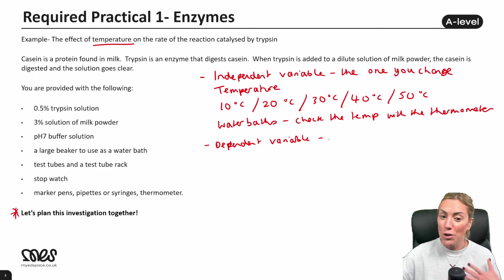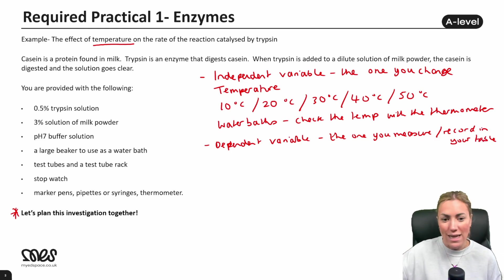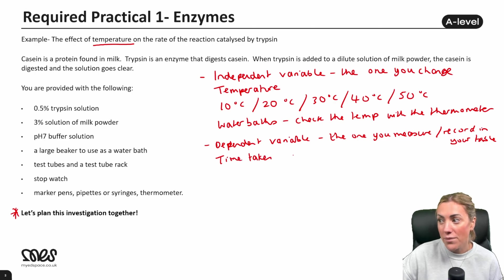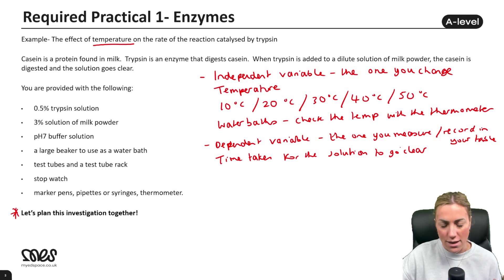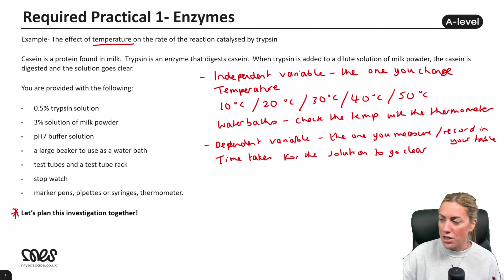The dependent variable depends on the independent variable — it's the one you measure, the one you record in your table. In this case it's the time taken for the milk solution to go clear. Be specific: don't just say 'time taken' — say 'time taken for the solution to go clear.' Once we have that data we can then calculate a rate of reaction.